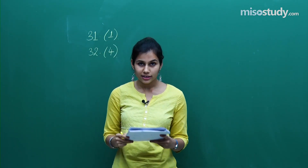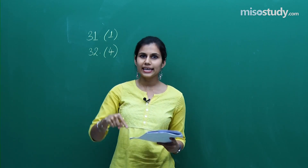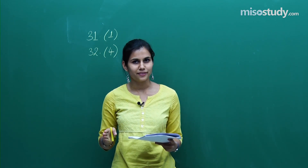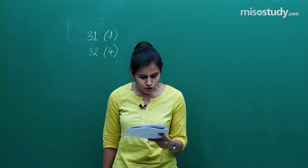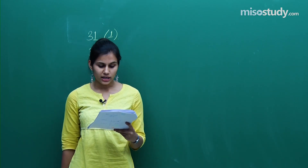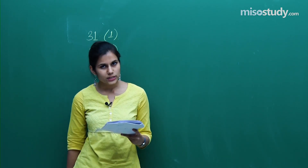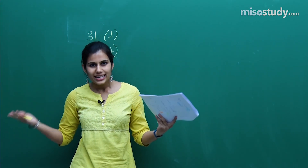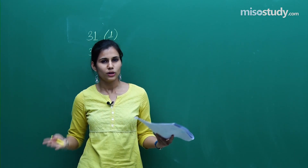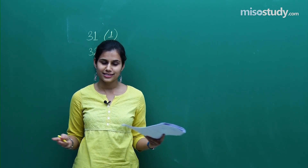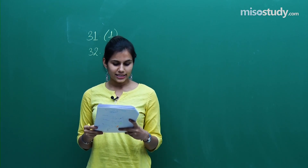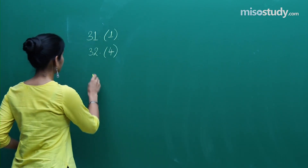Moving on to question 33, again conic sections — see how important this topic is. This time it was asked on the parabola: y² = 16x was given as the standard equation. What easier could you have got? The answer to this question is the first option.